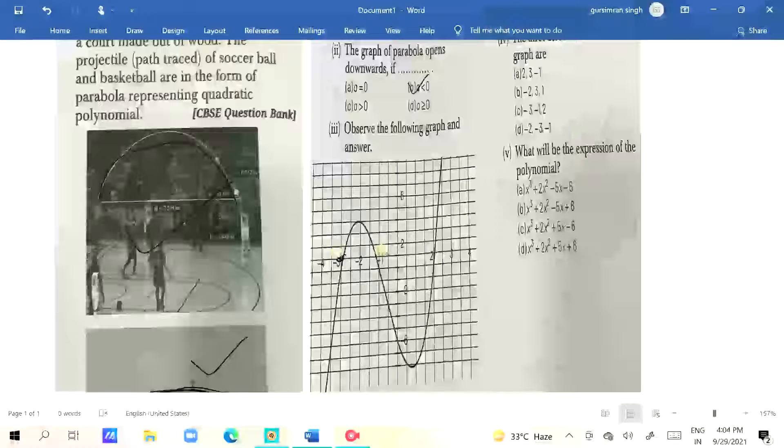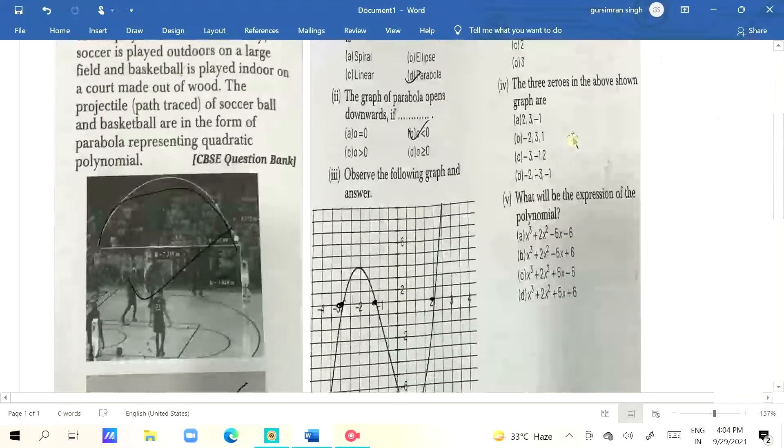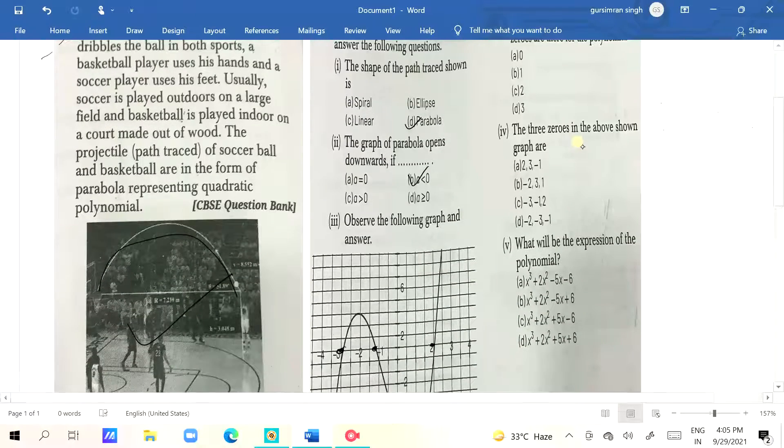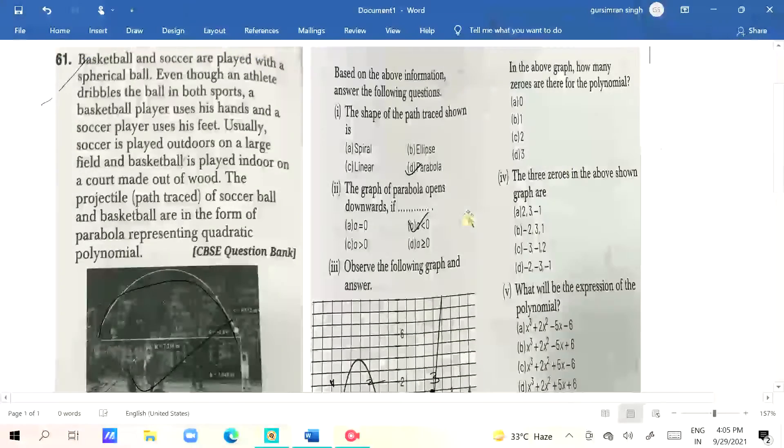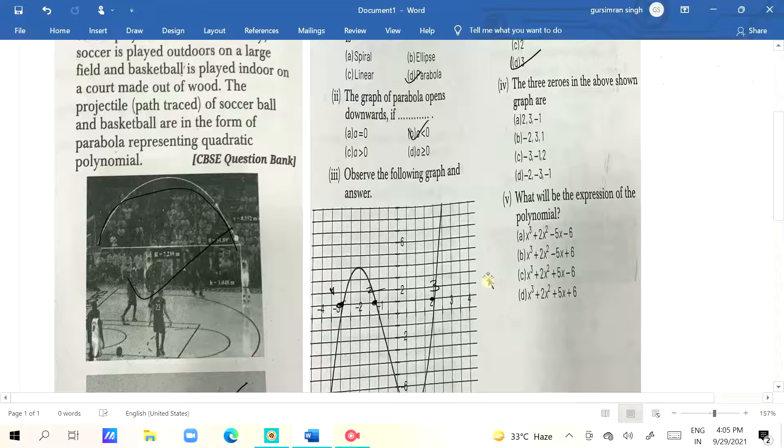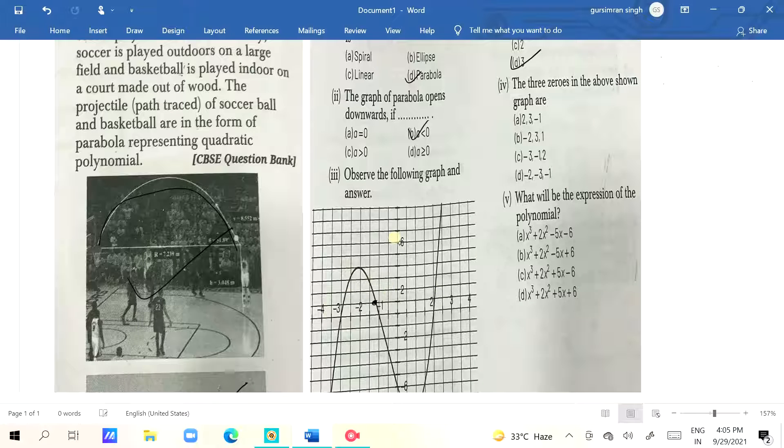Remember that. How many times is the parabola touching the x-axis? Here it will touch one time here and here. That means its zeros are 3. Where it touches the x-axis, there are three zeros: (-3, 0), (-1, 0), and (2, 0). So let me note that.